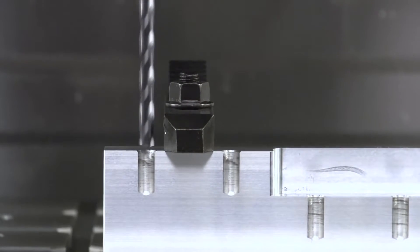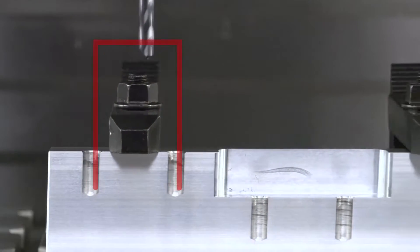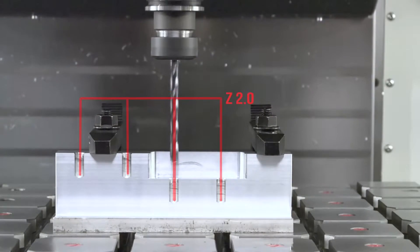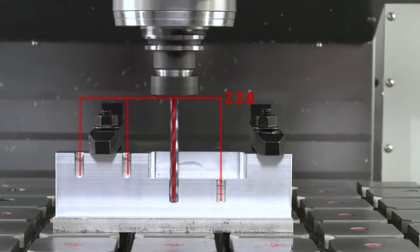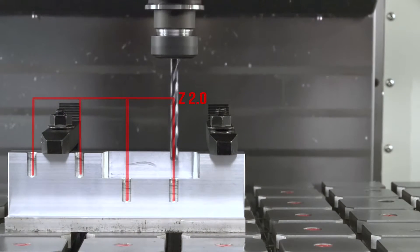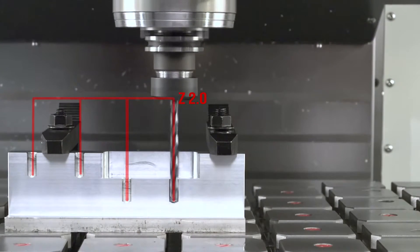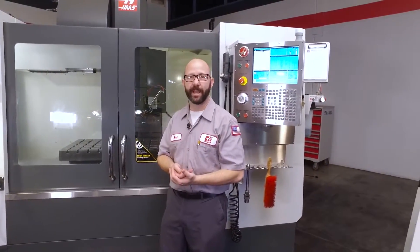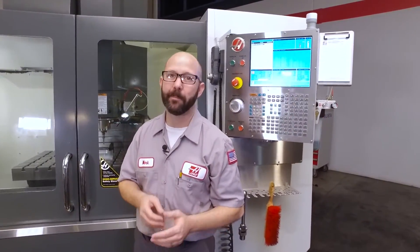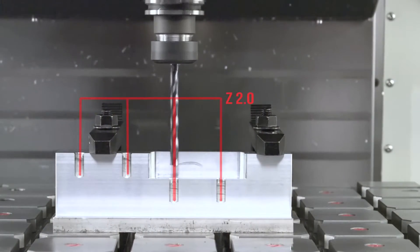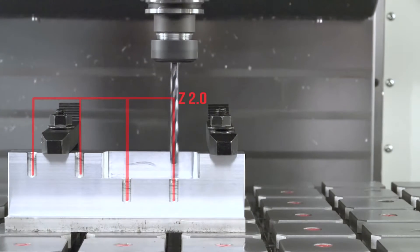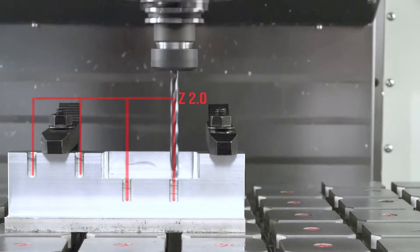Well, we've altered our program, and now our tool is hopping up and over our clamps, and returns to that same Z2.0 starting position after each drilled hole. Well, that worked great. We dodged those clamps, and we didn't break our tool, but we wasted a lot of time cutting air on those last two holes. We're better than that.